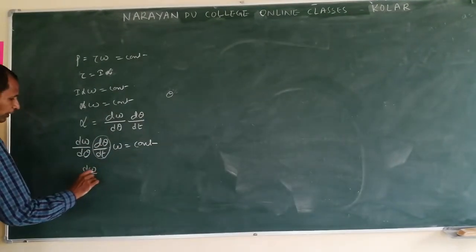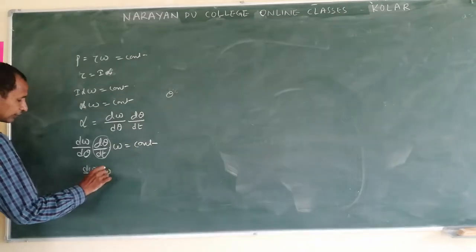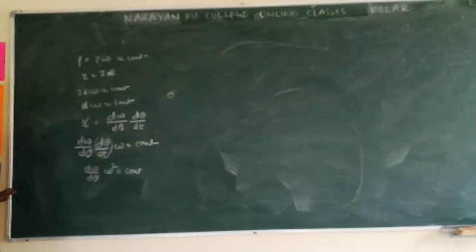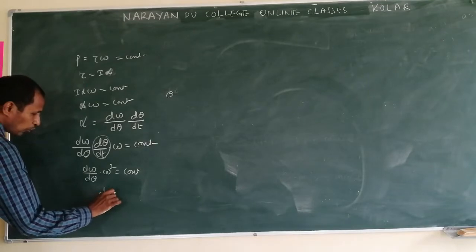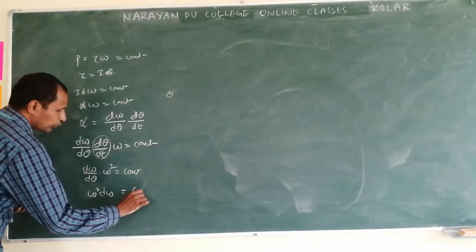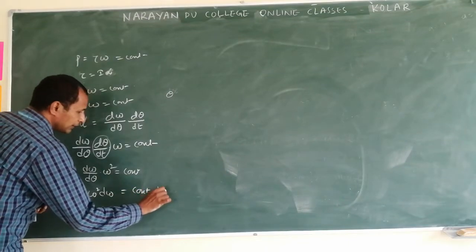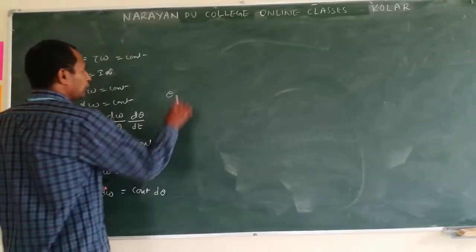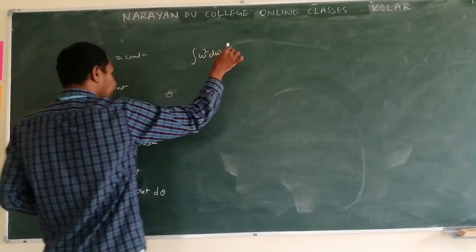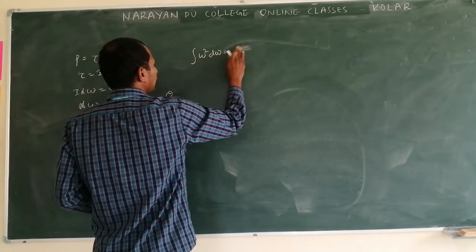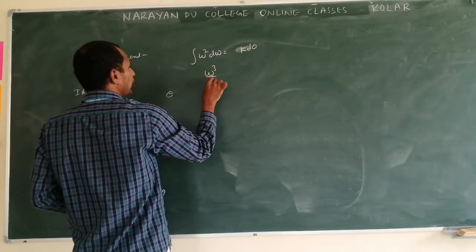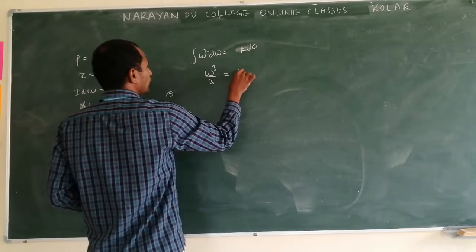If you integrate what you get? Omega square d omega is equal to constant, you take it as k d theta. So this is omega cube by 3 is equal to k theta.